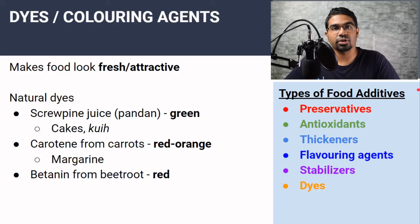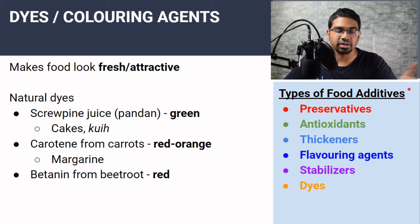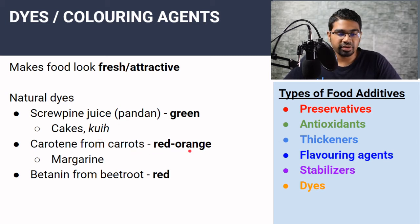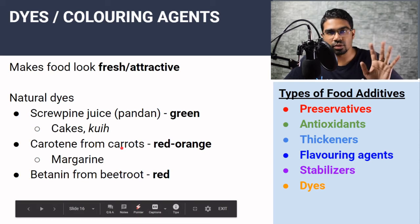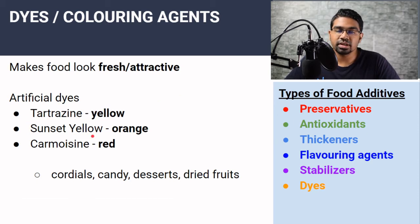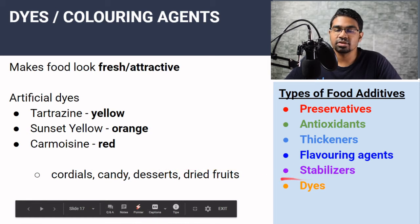Dyes and coloring agents are used to improve the looks of food — brighter colors make food look fresher and more attractive. Natural dyes include screw pine (pandan) juice, which is green and commonly used in cakes; carotene from carrots, a reddish-orange used in margarine; and betanine from beetroot, a red dye. Synthetic dyes include tartrazine (yellow), sunset yellow (orange-yellow), and carmoisin (red), commonly used in cordials, candy, desserts, and dried fruits.